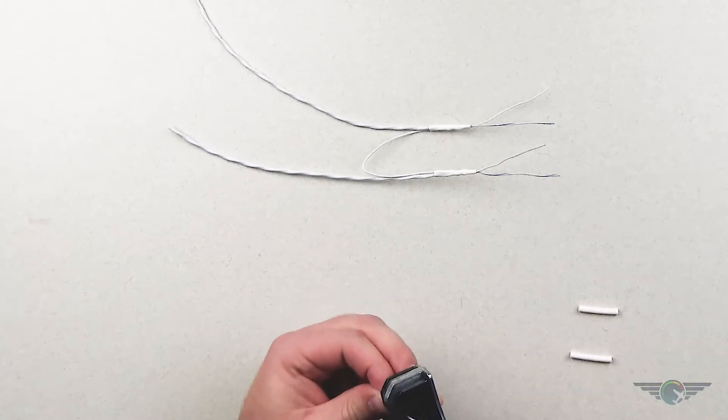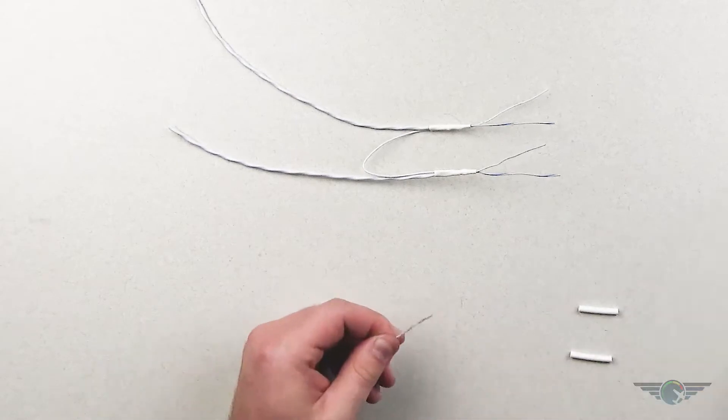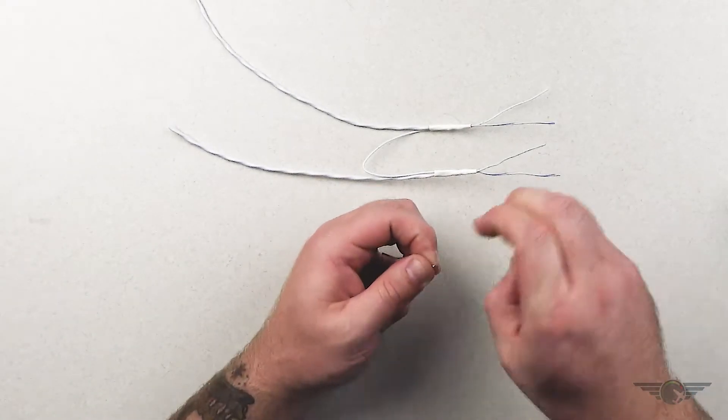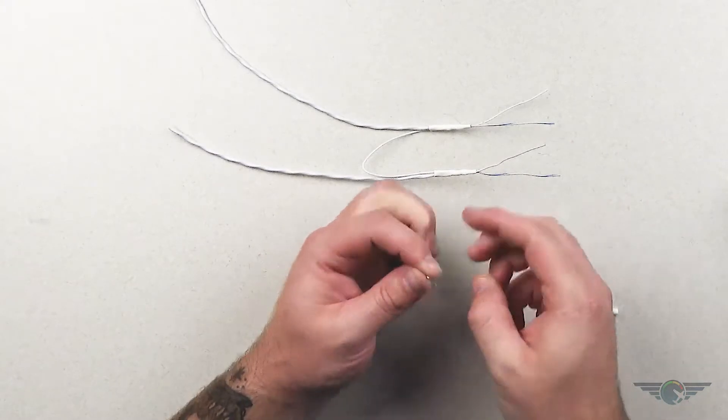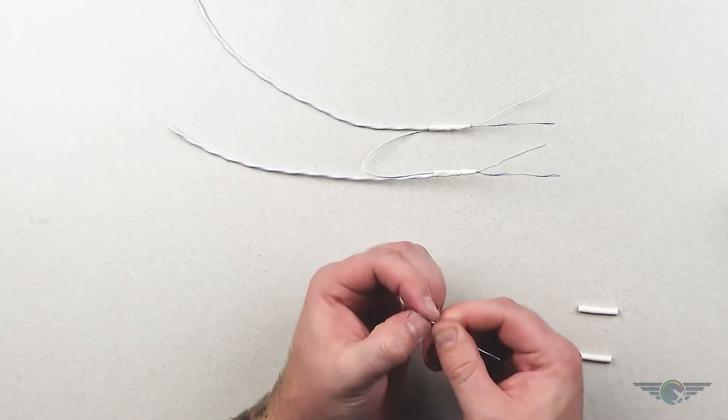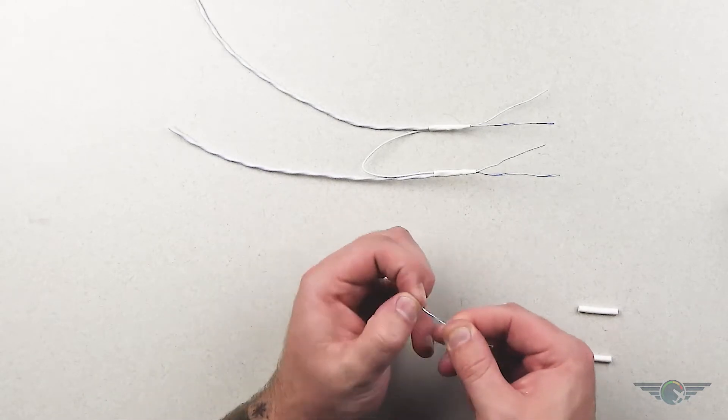So I'm going to strip this out. Cut it kind of long, and then we're going to fan that conductor out. You can use your fingernail or whatever you need to do there.